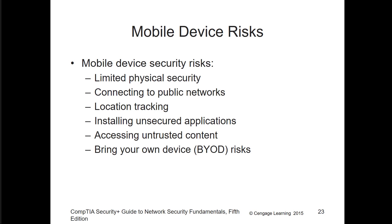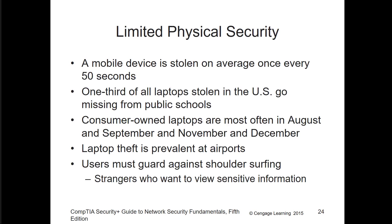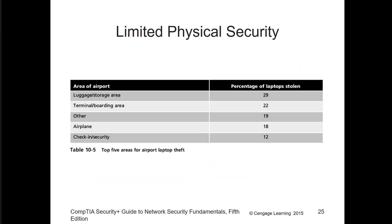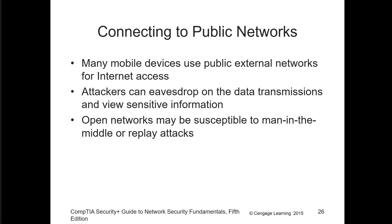Moving on to mobile device risks: physical security, location, installing or uninstalling applications, trusted content, and BYOD risks. A lot of mobile devices are stolen, so passwords and GPS tracking are important security measures. Devices are frequently stolen in areas like airports — in the luggage area, storage area, terminal, in the airplane itself, or even during check-in. Connecting to a public network is always a concern, because attackers could eavesdrop and perform a man-in-the-middle or replay attack, capturing passwords or other sensitive information.